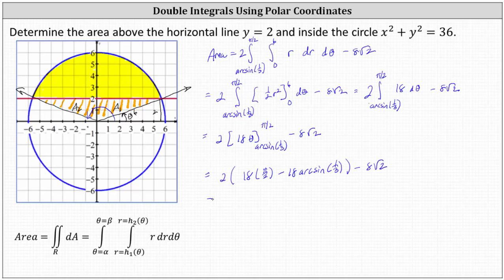Simplifying one last time, 18 times pi divided by two is nine pi. Nine pi times two is 18 pi. And then we have minus 36 arc sine one third minus eight square root two.